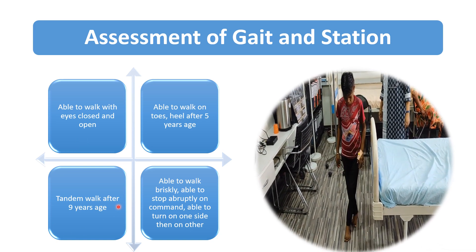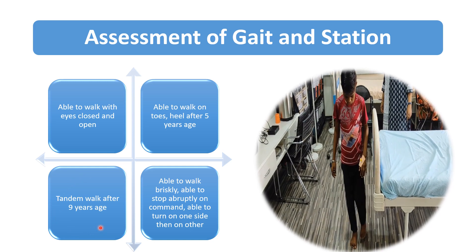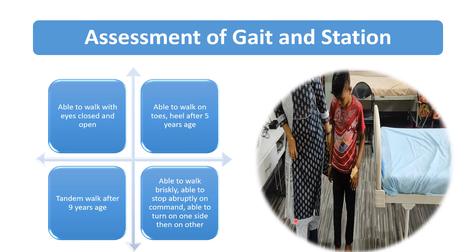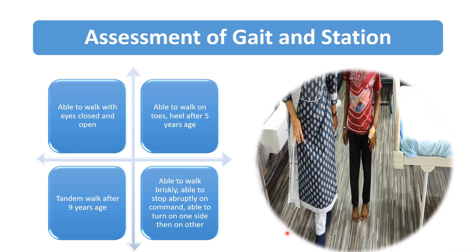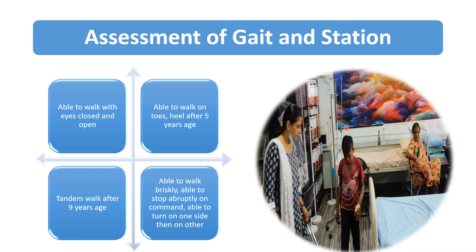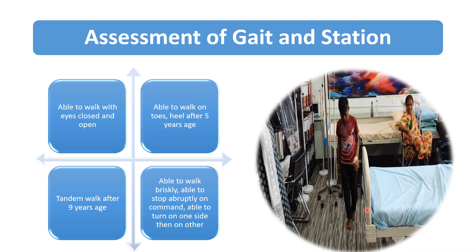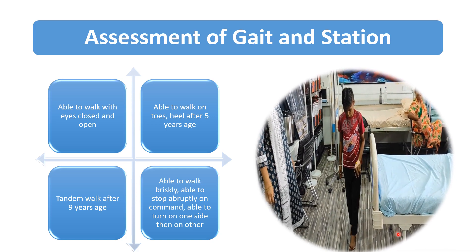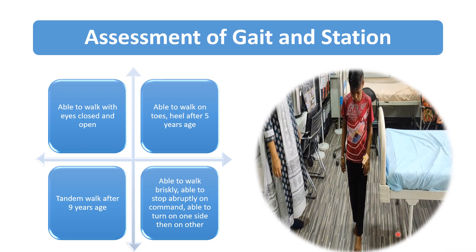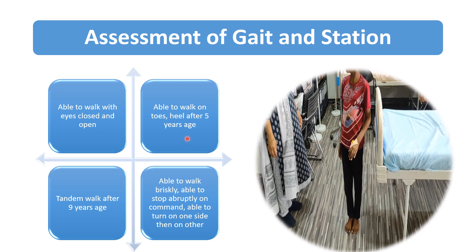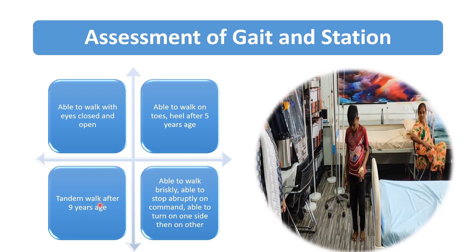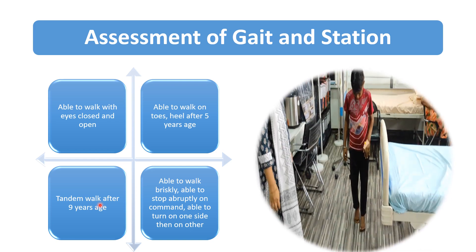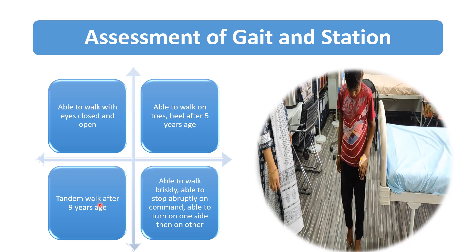In children older than 9 years, we tell the child to perform the tandem walk. The child performs the tandem walk by keeping the heel of the foot in front of the toes of the other foot. If the child is able to perform it, gait is normal. In cerebellar ataxia, the child will not be able to perform this walk.